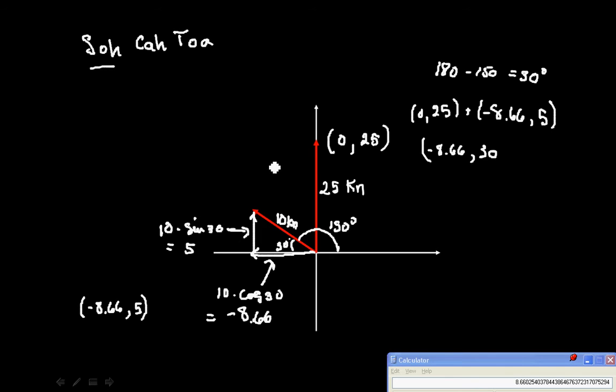So my resulting vector will be at negative 8.66 over here, and then comma 30. 30 is a little bit higher than 25, so say somewhere over here. So my resultant vector looks like this. Kind of like this.